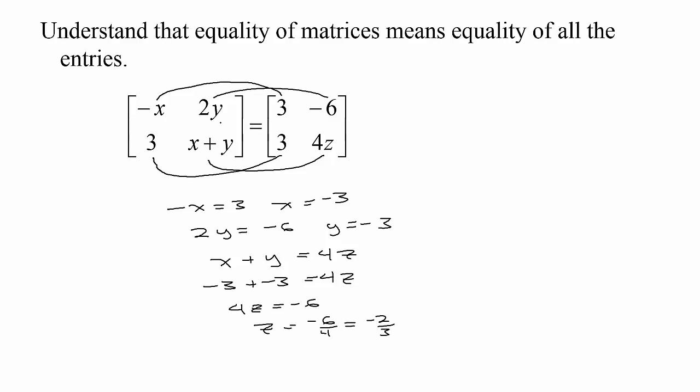If two matrices are going to be equal, each of their entries have to be equal. Two matrices can't be equal if they have different dimensions. When we talk about dimensions we always call out the number of rows first and the number of columns second.